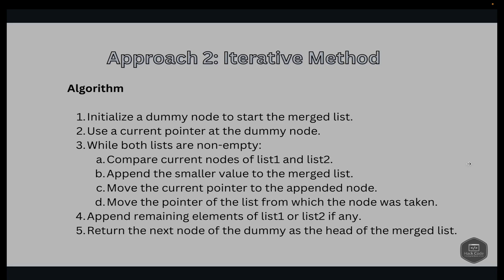Now for the iterative method. First, we initialize a dummy node to act as the start of the new merged list and maintain a current pointer pointing to the dummy node. While both list1 and list2 are not empty, we compare the current nodes and append the smaller value to the merged list, move the current pointer to the appended node, and advance the pointer in the list from which the smaller node was taken. After the loop, if either list remains non-empty, we append those remaining elements to the merged list, then return dummy.next.